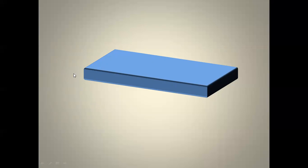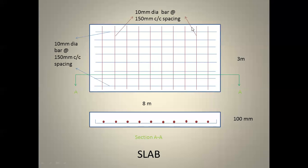We are going to cut in between and look from the top to see what is present inside the slab. Then we will make a cut parallel to the thickness plane and look from the side to see how the reinforcement is arranged inside.